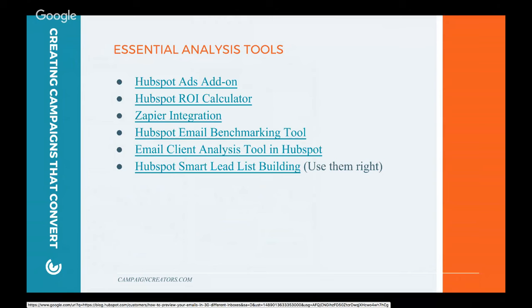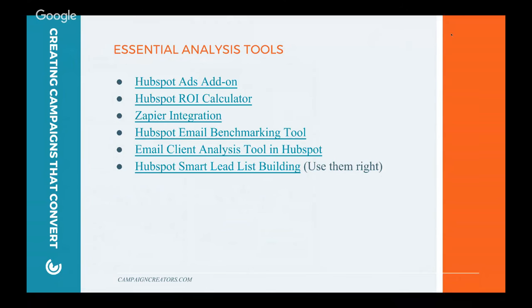Another one I wanted to mention: I'm sure a lot of you are already using lead lists inside of HubSpot — use them right for smart lead list building. Really dig in and find some of those not so well-used functions, for example building lists based on how people are interacting with your emails: if they're opening them, if they're clicking them, how they're doing it inside of a particular campaign, whether they're filling out forms, and then using that to cater information to those specific groups.